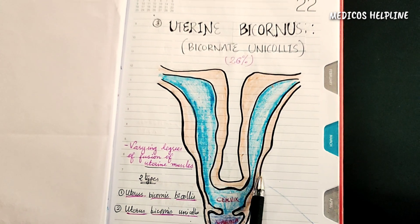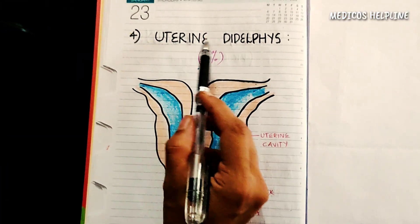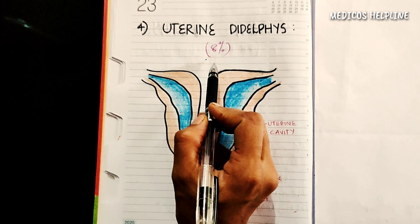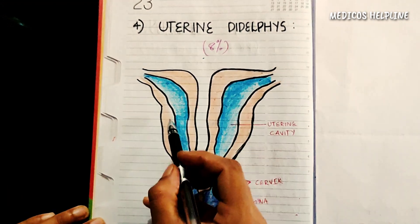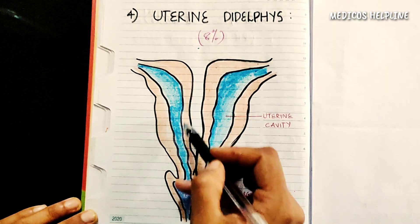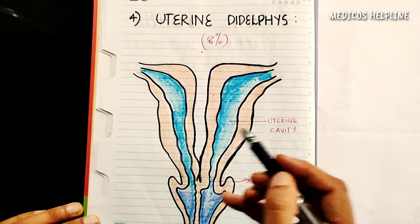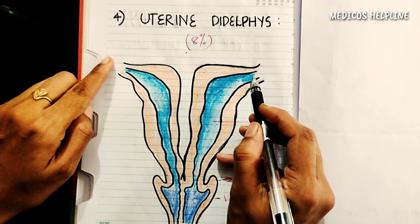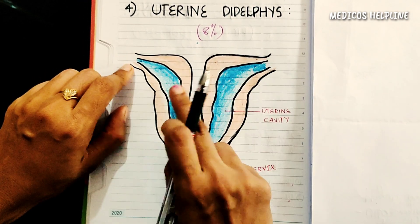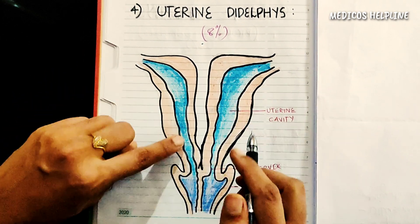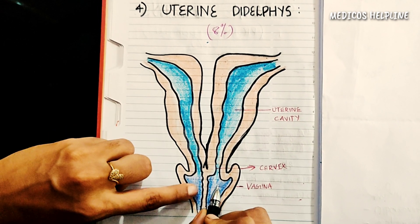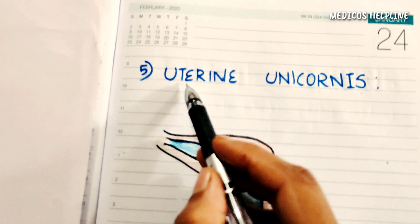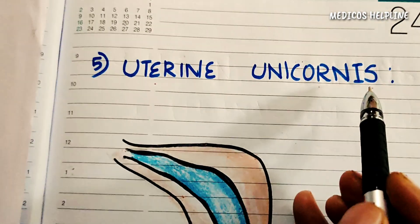The next one is uterine didelphys, which forms about 8% of all uterine anomalies. Here the Müllerian ducts completely fail to fuse during the embryonic stage, resulting in the formation of two separate uterine bodies, two cervices, and two vaginas — that is, the formation of two uteruses in a body.